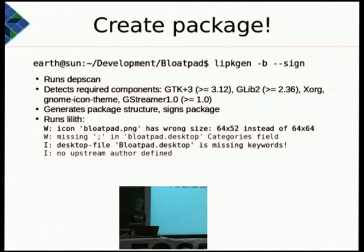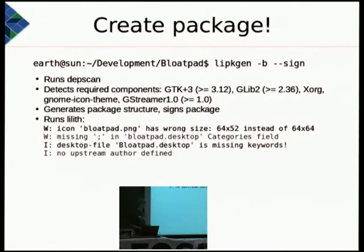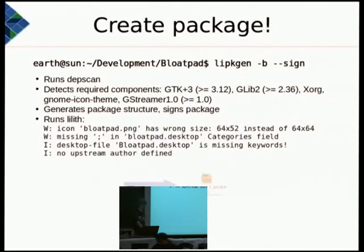It then generates the package structure, signs the package, and runs Lintian — a small tool to validate pieces of the upstream work in order to get a high-quality package and tell upstream when something is wrong. By doing that we address one concern of distributors that upstream projects might create poor packages, since Listaller won't allow that, and will warn the upstream developer about minor issues that can be fixed.